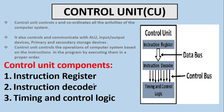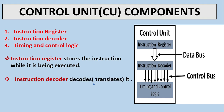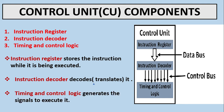The components of the control unit are: the instruction register, instruction decoder, and timing and control logic. The instruction register stores the instruction while it is being executed. It then passes to the instruction decoder, which translates it into binary form. Finally, timing and control logic generates the signals to execute it.